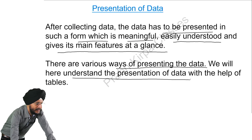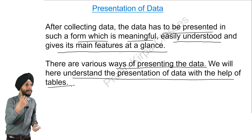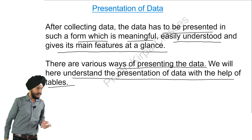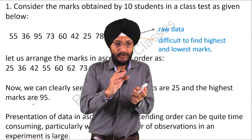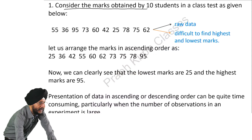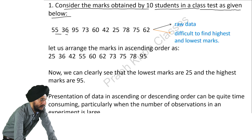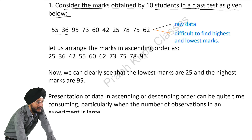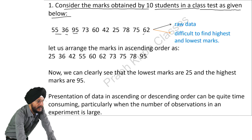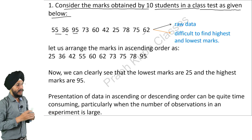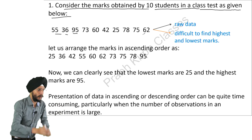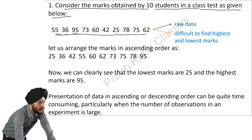We will understand the presentation of data with the help of tables. Consider the marks obtained by 10 students in a class test. One student obtained 55, another 66, another 95, and so on. Different students obtained different marks. But what does this data show? Does it mean anything to you? No. This is raw data — we have simply written the marks obtained by different students.